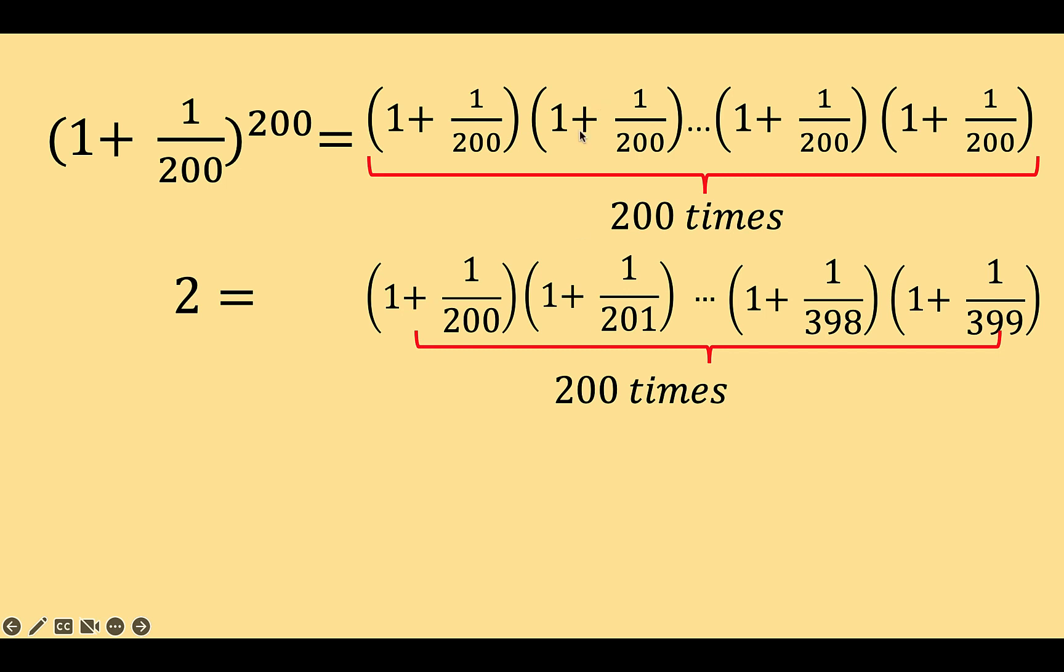And so we can compare factor by factor all these 200 pairs of factors. So let's look at the first pair, 1 plus 1 over 200 compared to 1 plus 1 over 200. We know these two factors are equal. Let's move to the next pair, 1 plus 1 over 200 and 1 plus 1 over 201. So the difference is we have here 1 over 200 and 1 over 201.